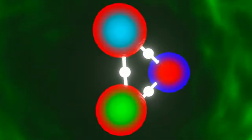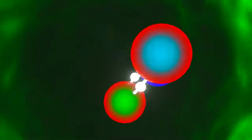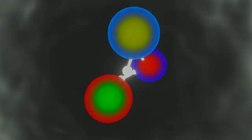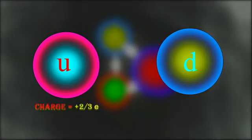Now we will talk about up and down quarks because only these two quarks are found in a stable state. Up quarks have a positive two-thirds charge of elementary charge, and down quarks have a negative one-third charge of elementary charge.